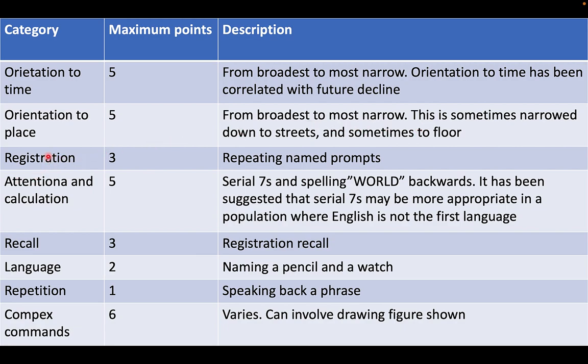Then you have registration, which is out of three — repeating named prompts. You give them three different names, like for example an apple, a penny, and maybe a chair.